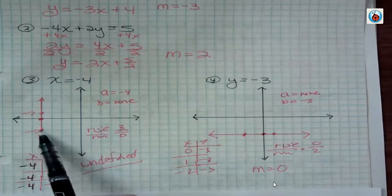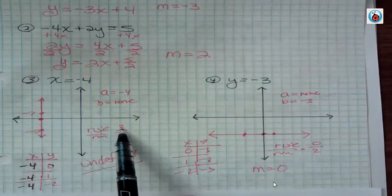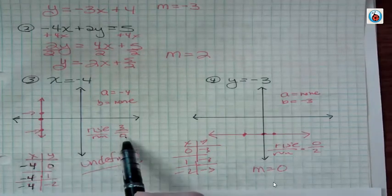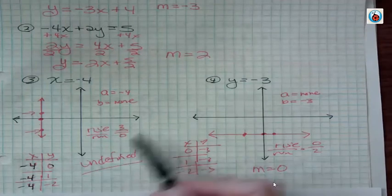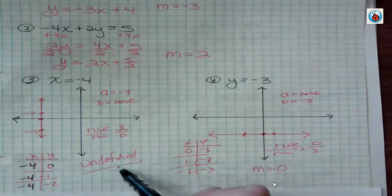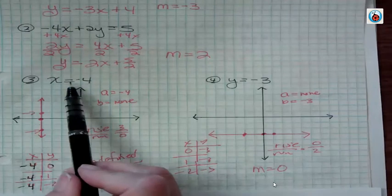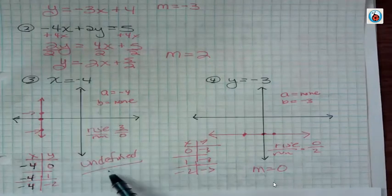If you look from one point to the other, the rise, 1, 2, 3, is 3. But the run, there's no run. We're not going left or right. It's just 0. And when you divide by 0, your slope is undefined. So if you're given an equation where x equals a number, you're always going to have undefined slope.